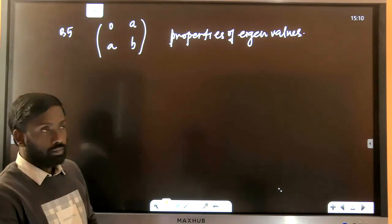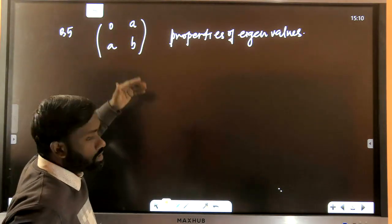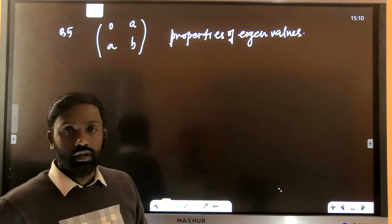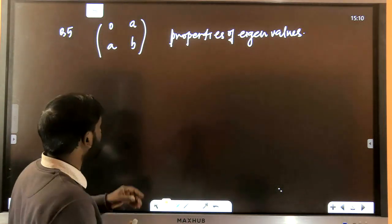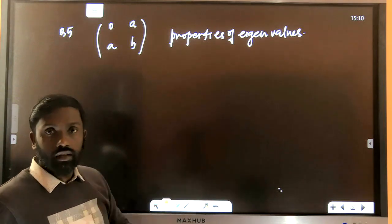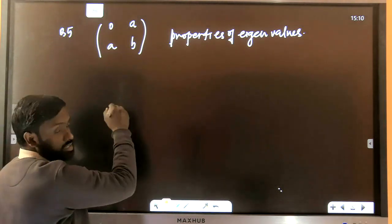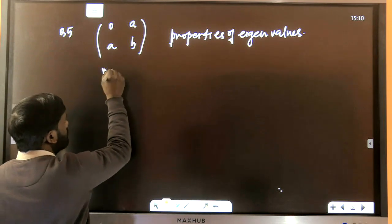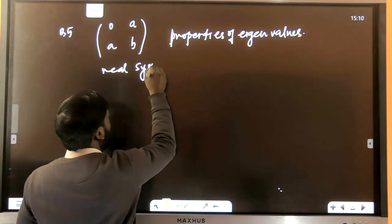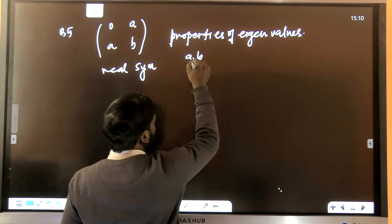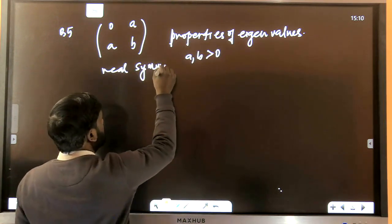The next question involves a matrix. One eigenvalue is negative — or the question asks about eigenvalue properties. The matrix is real and symmetric, with a and b both greater than zero.